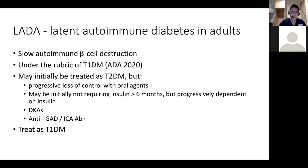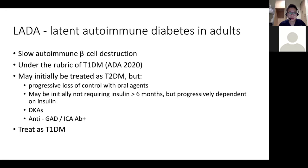Next would be latent autoimmune diabetes in adults — LADA. Simply put, I would consider this a type 1 diabetes — it is actually autoimmune destruction of the beta cells. The special feature is a progressive loss of control with all agents. This patient may be diagnosed with type 2 first, treated well with oral agents initially, and may not even require insulin for more than six months. But as the disease progresses, they become progressively dependent on insulin, get recurrent DKAs, and if the antibody is positive, that helps with the diagnosis.